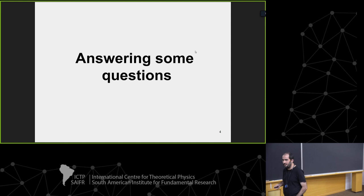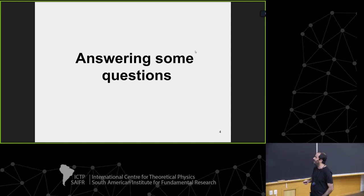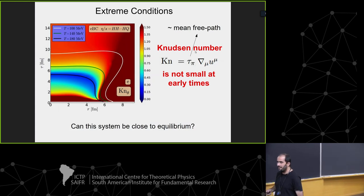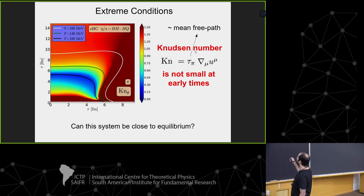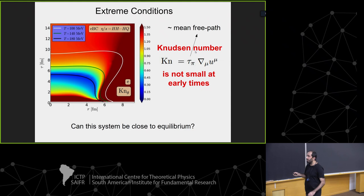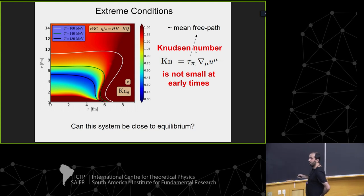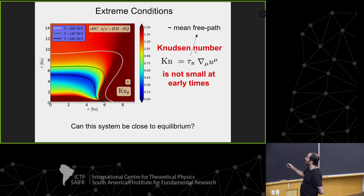Before we go there, I want to answer some questions from yesterday. Someone asked about the Knudsen number in heavy-ion collisions. This plot shows an estimate of the Knudsen number calculated from fluid dynamical models. We plot throughout the whole evolution of a heavy-ion collision the relaxation time, which is proportional to the mean free path — a microscopic scale — compared to the expansion rate, which defines an inverse macroscopic scale.